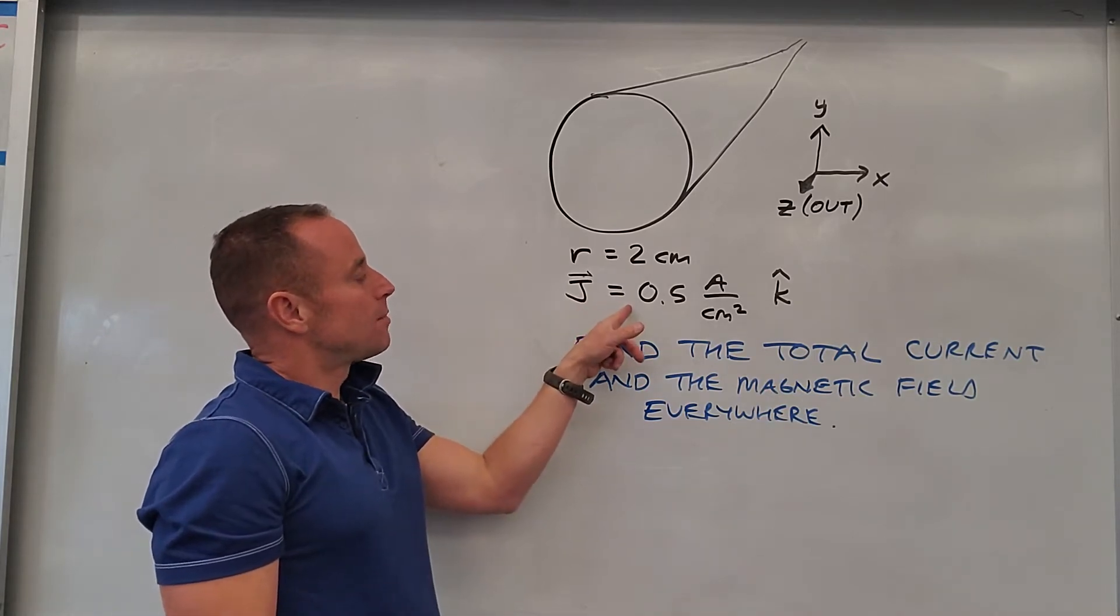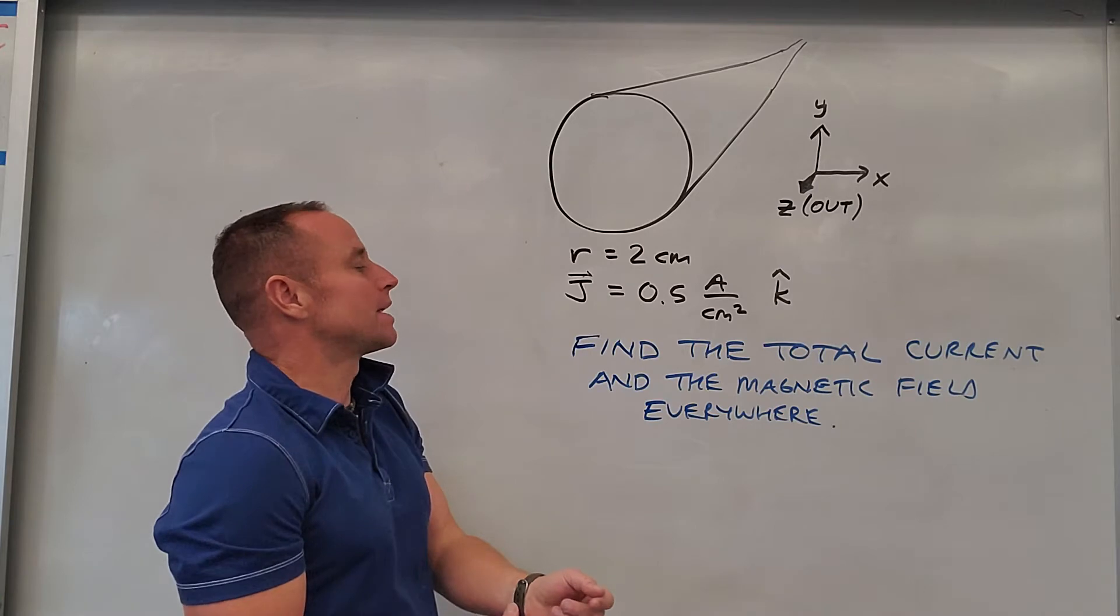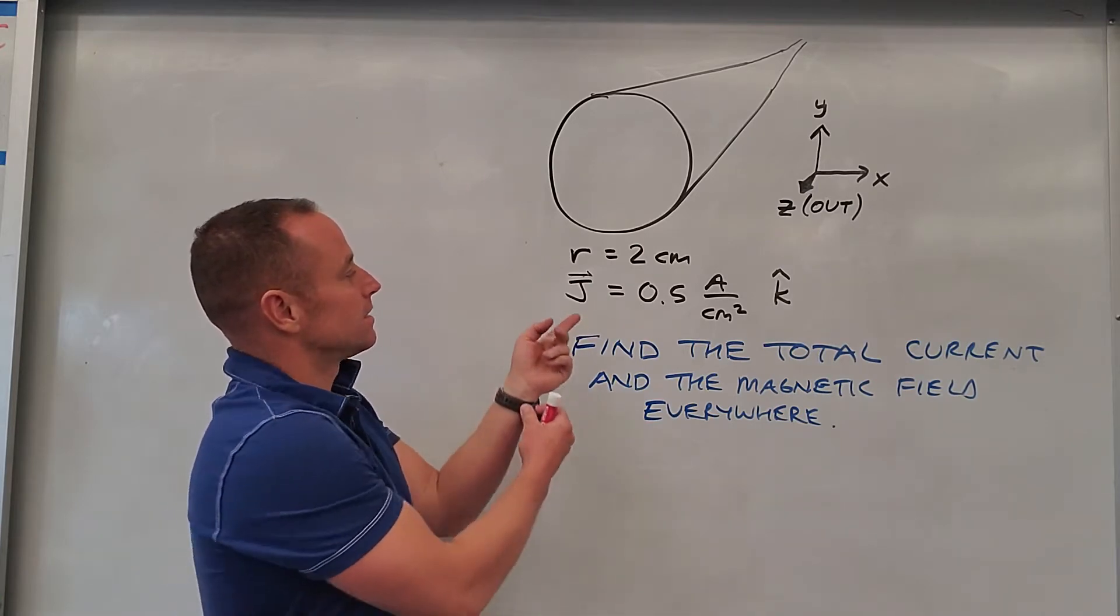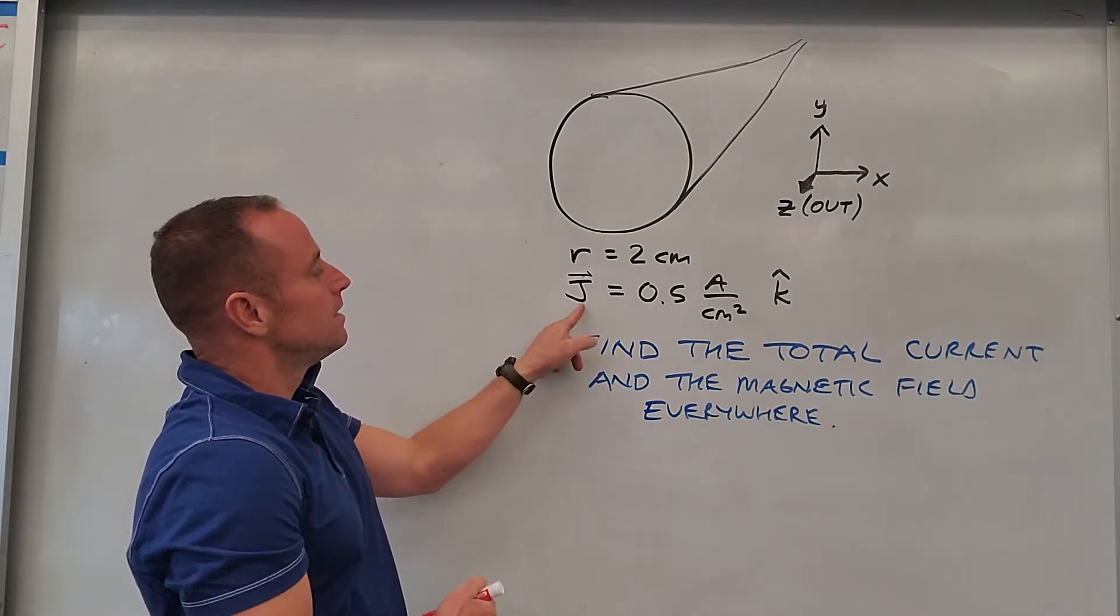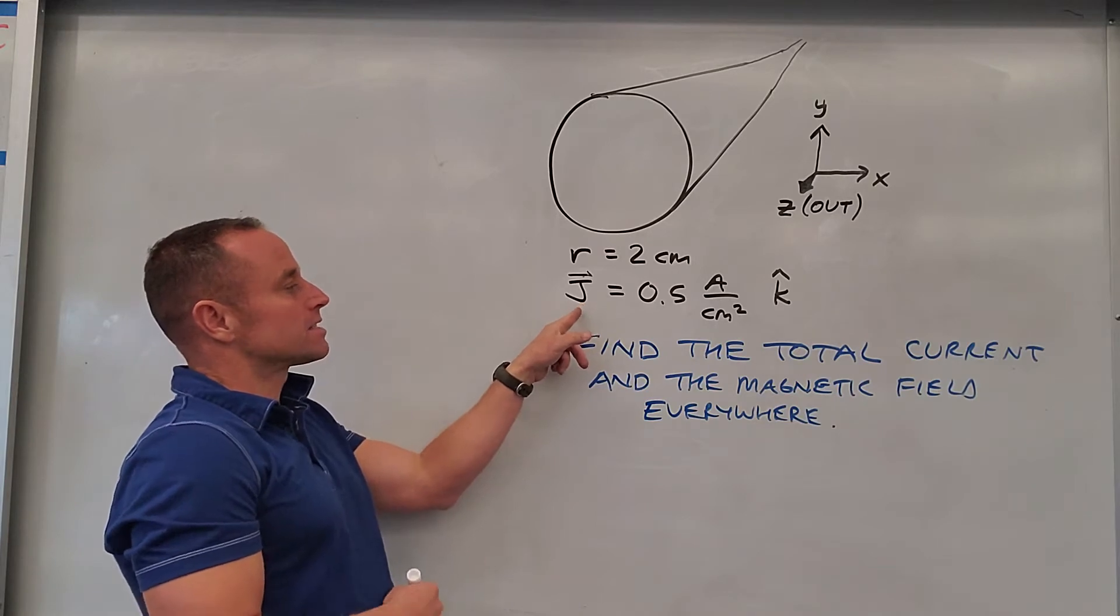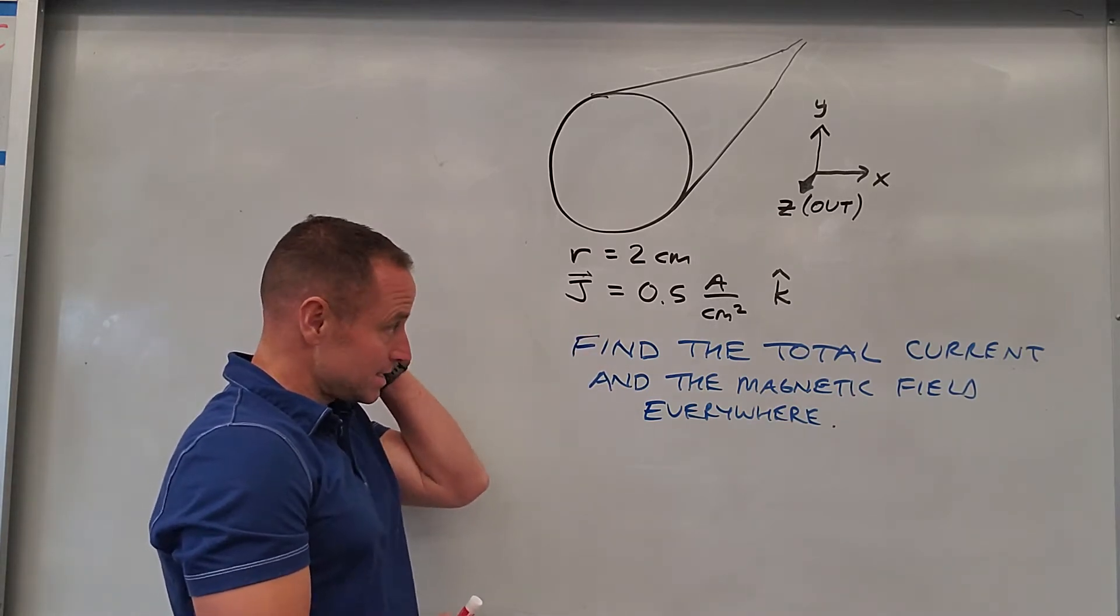current. But instead of just giving you a current in amperes, it's giving you a current density. So current per area. This thing J represents what's called current density and